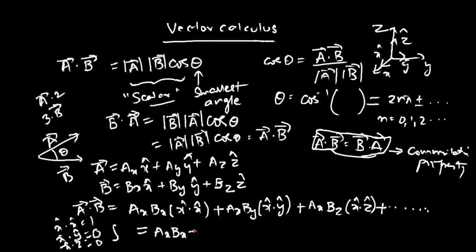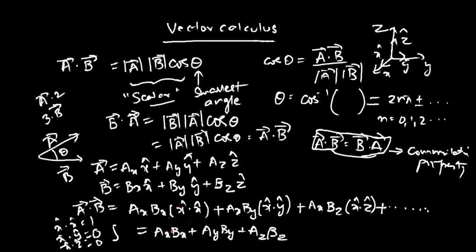Substituting those unit vector dot product values, a-bar · b-bar simplifies to Ax·Bx + Ay·By + Az·Bz. From now on, if you are given two vectors in Cartesian form and asked for their dot product, simply multiply the corresponding components and sum them. Similarly, b-bar · a-bar = Bx·Ax + By·Ay + Bz·Az, which is the same number — confirming the dot product always yields a scalar quantity.